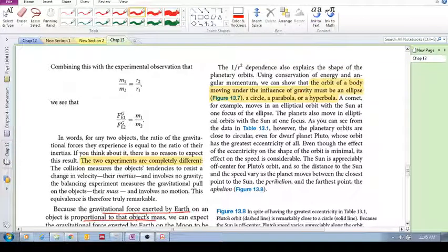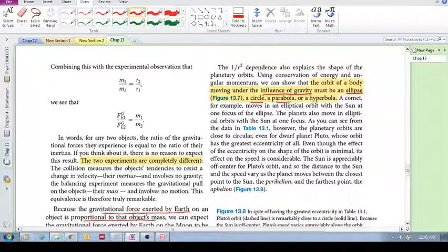Let's have a quick look at the orbit of the planets, or the orbit of a body moving under the influence of gravity. These orbits must either be an ellipse, a circle, a parabola, or a hyperbola.